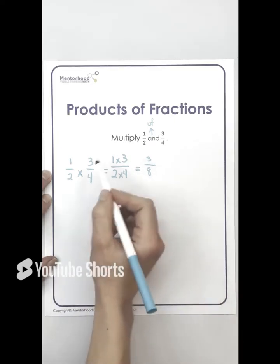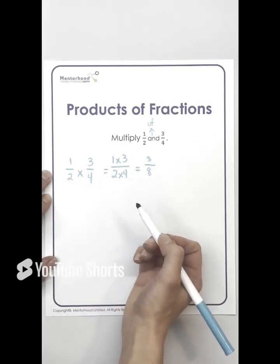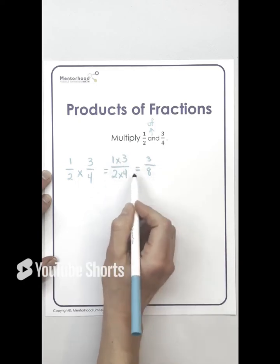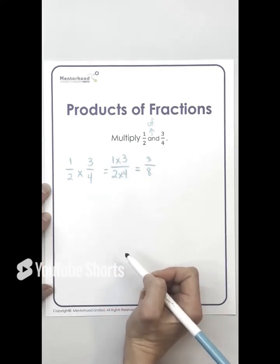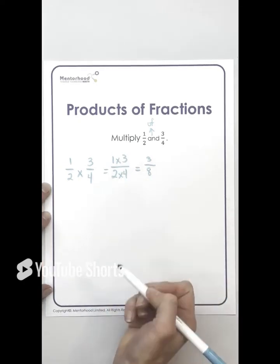Now the neat thing about multiplying fractions is that it doesn't matter what order it comes in as long as you end up with one and three on the top and two and four on the bottom. So let's see some other examples that would also give us three eighths. What if this was written as three quarters times one half?